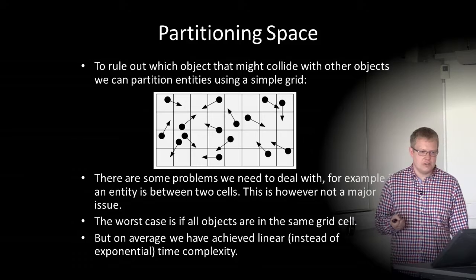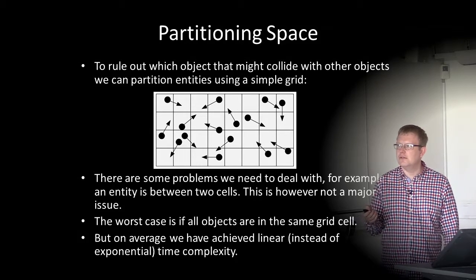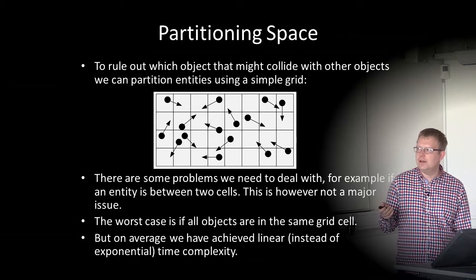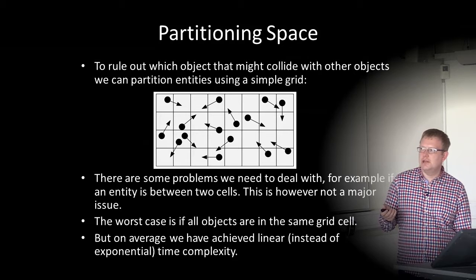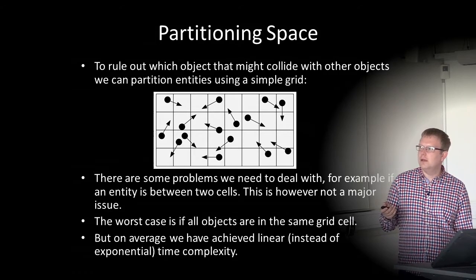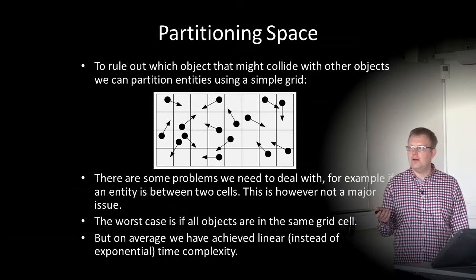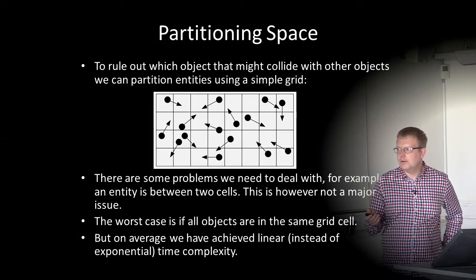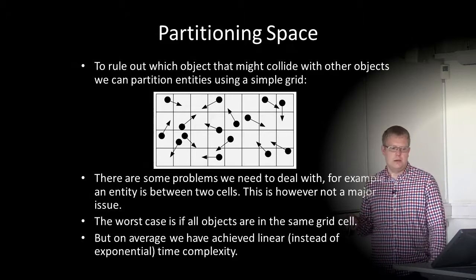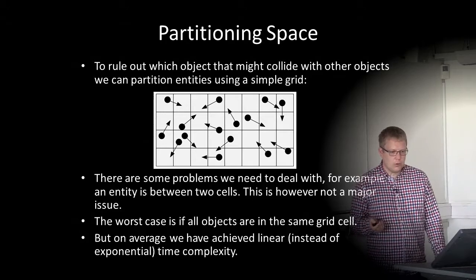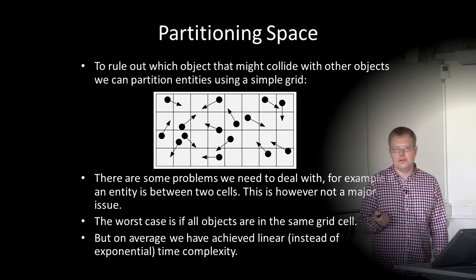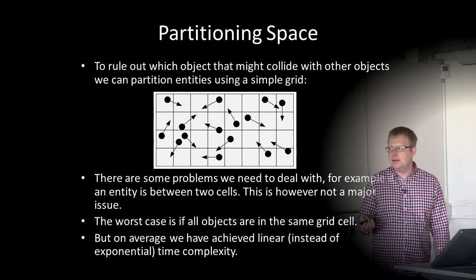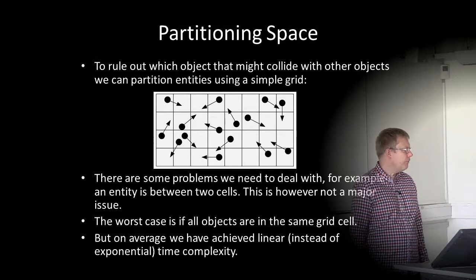A second optimization is space partitioning. We place objects in a grid and only check collisions between objects in the same or neighboring cells — eliminating checks against objects on the other side of the game world. On average, this reduces the number of collision checks from exponential to linear time complexity.